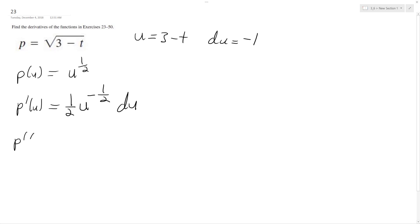And then we'll sub this back in for x. We'll have 1 half x, oops, not x, but sub in for u, 3 minus t raised to the negative 1 half, and then du, which is negative 1.